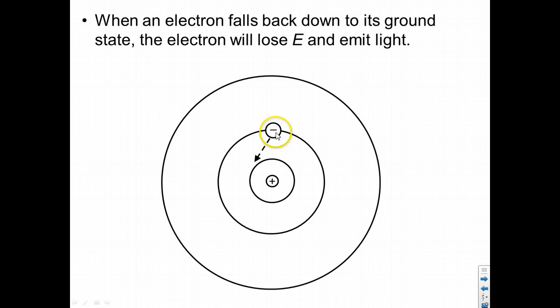So the energy that is, quote unquote, lost, is really just emitted in the form of light. So the electron falls back down, and it loses some energy, delta E, which is equal to the energy of the light which is emitted.